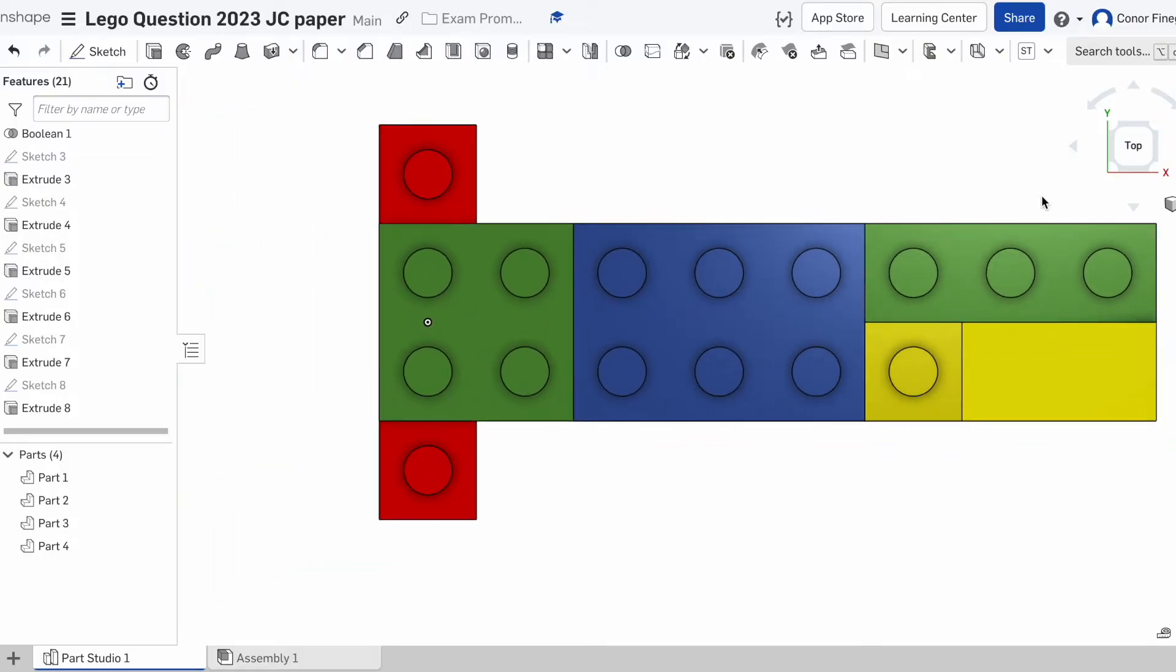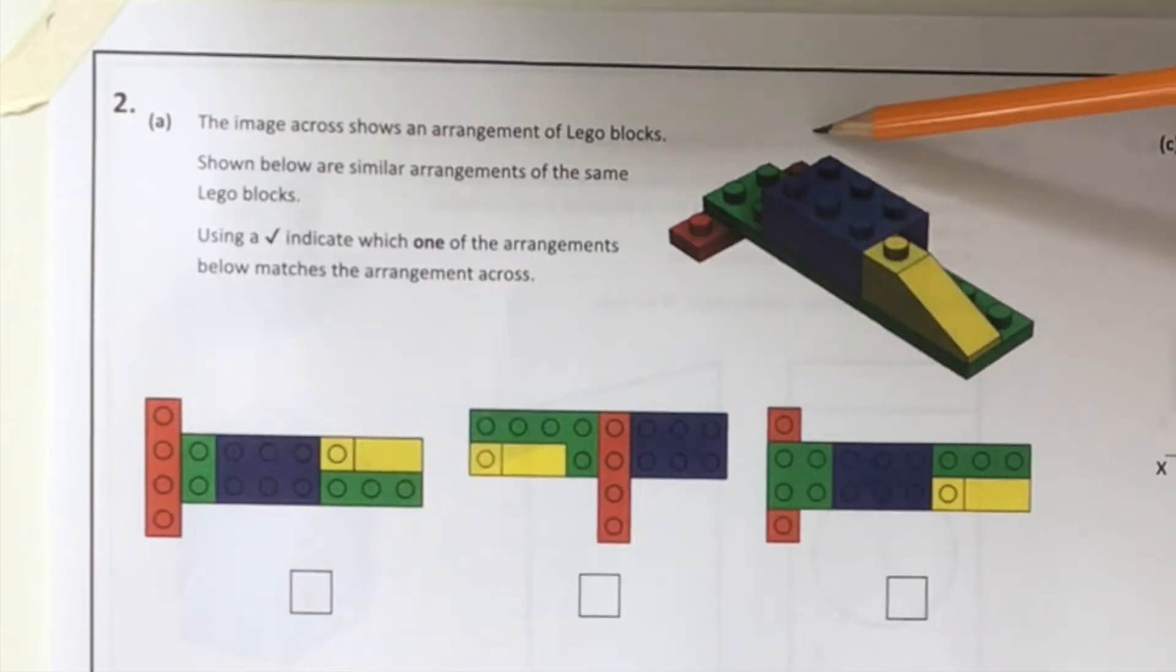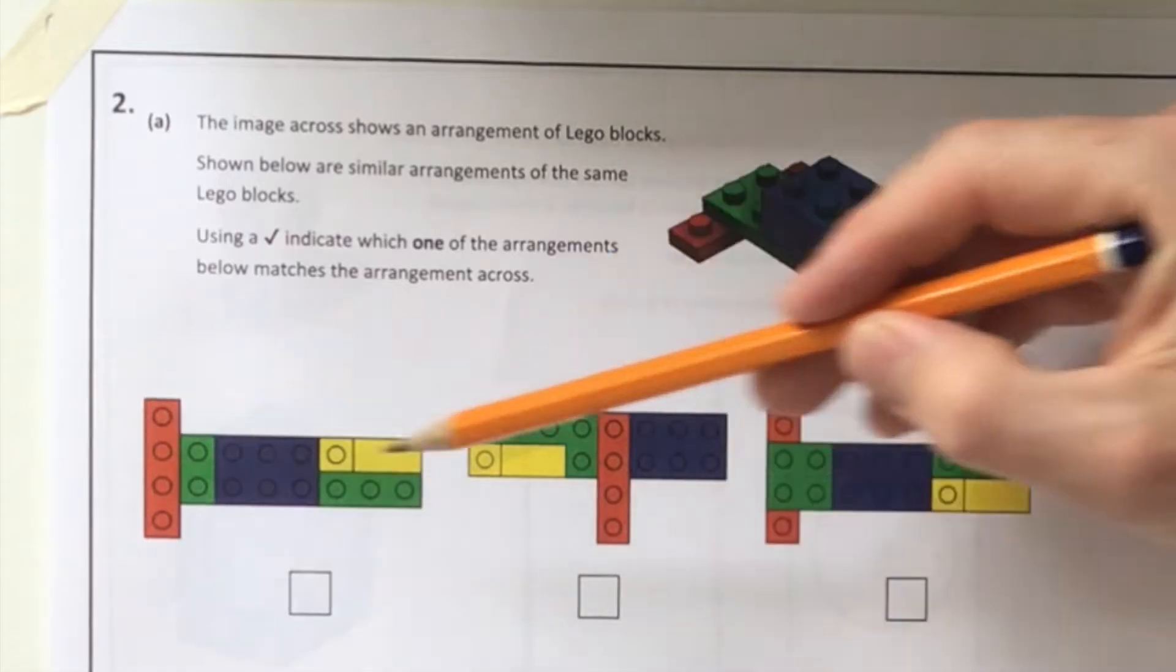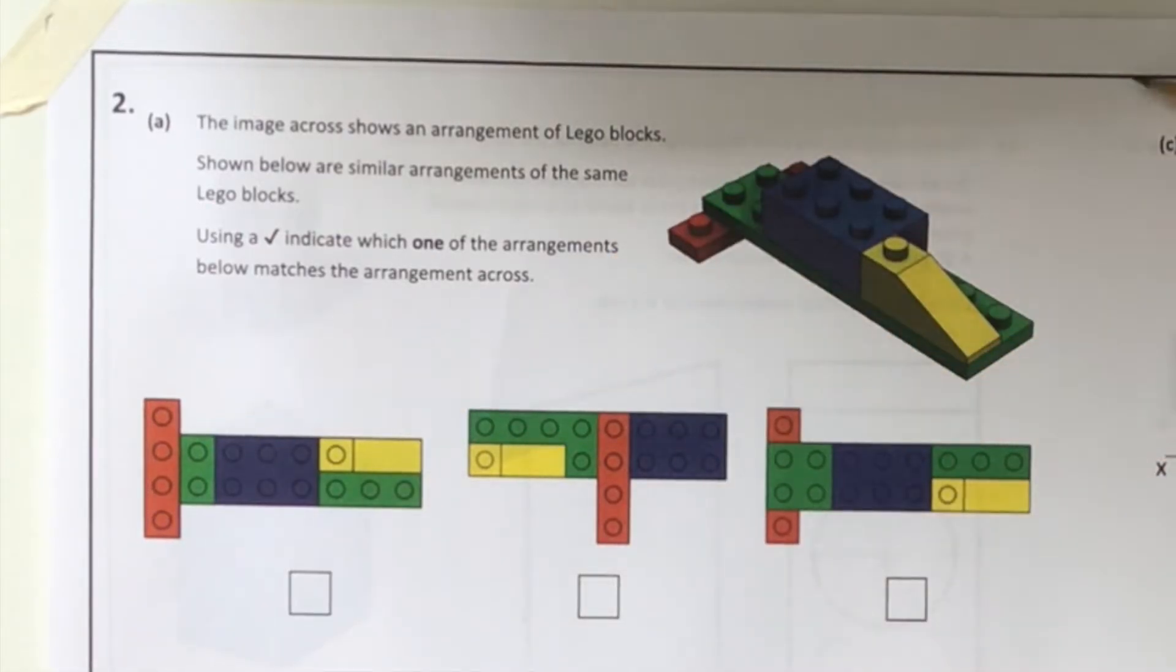When we flip back to our exam paper now, again we're concentrating on this back surface. So the only option for us, so that back red surface has been covered up, is the third option. We can see the red surface here and here, so it has to be the third option. Again, easy marks and we'll move on.